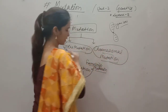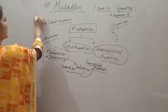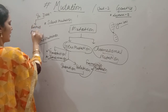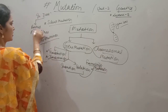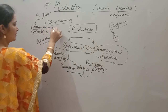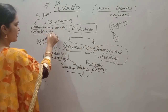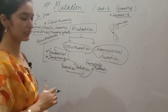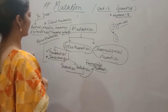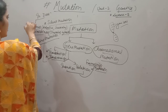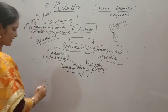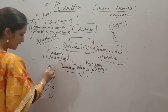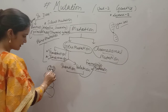Purines are adenine and guanine. Pyrimidines are thymine and cytosine, and uracil in case of RNA. These are the basic nitrogenous bases. In DNA, adenine forms a double bond with thymine, and guanine forms a triple bond with cytosine via hydrogen bonds.